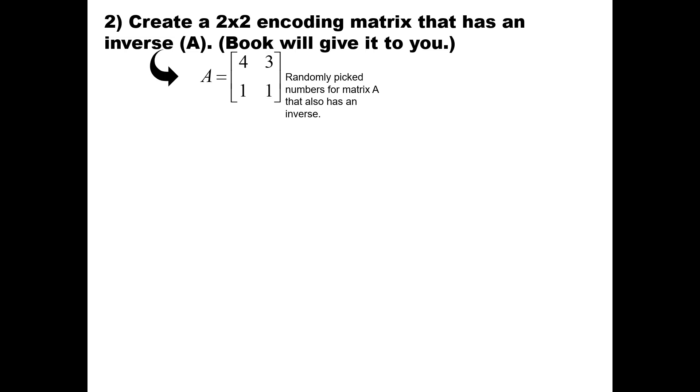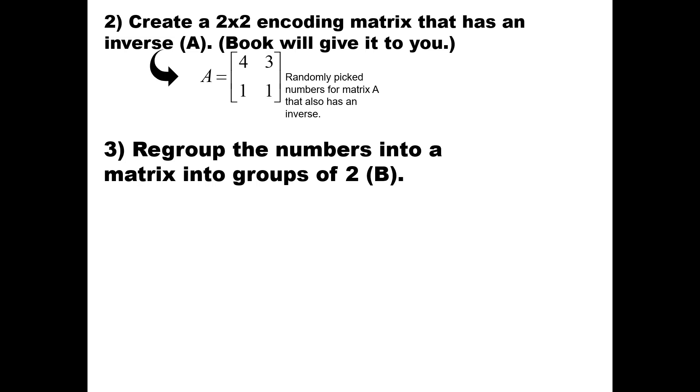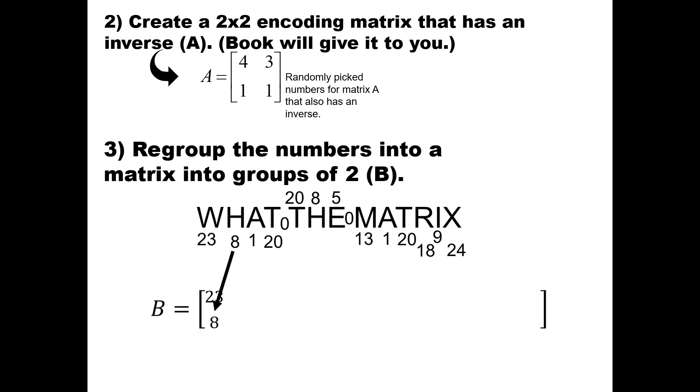Next we need to regroup the numbers into a matrix into groups of 2. This is going to be our B matrix. So here we go: W, H, A, T. You're going to notice I'm going up, down, up, down, up, down: 0, 20, 8, 5, 0, 13, 1, 20, 18, 9, 24, and the last one is 0 because we can't leave a blank space in the matrix.